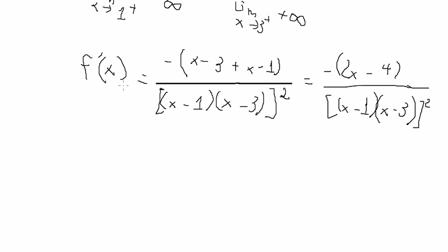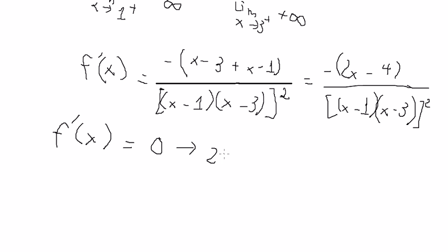So if we set the first derivative of the function equal to 0, we just have 2x minus 4 equals 0, and you get x equals number 2.